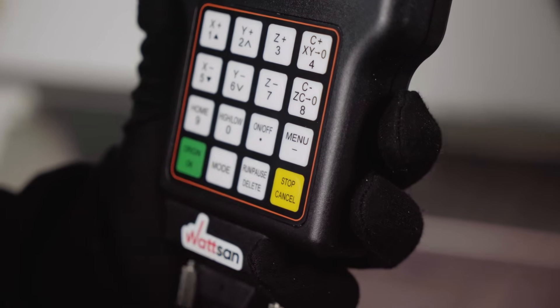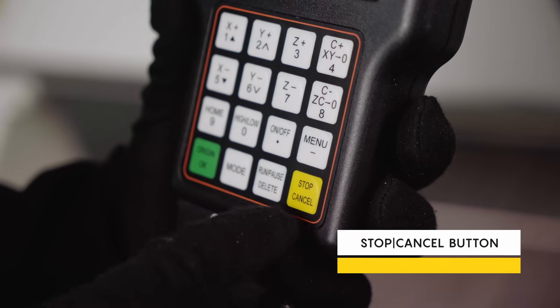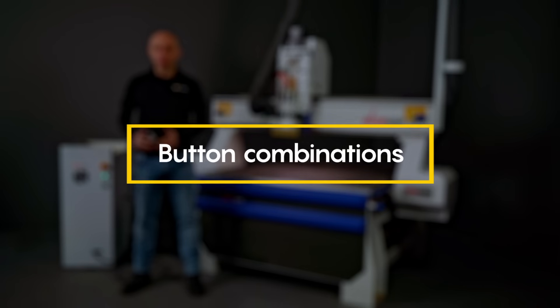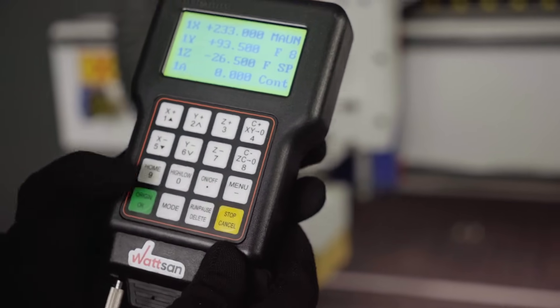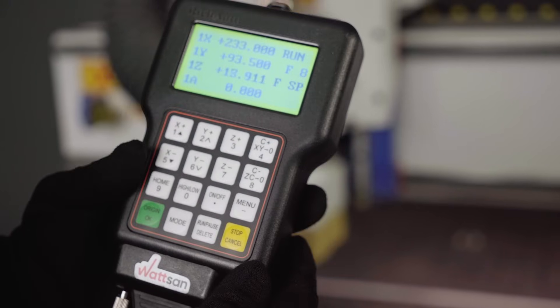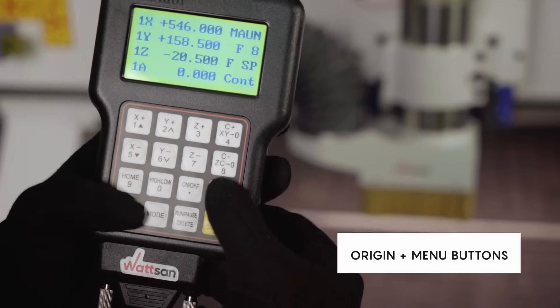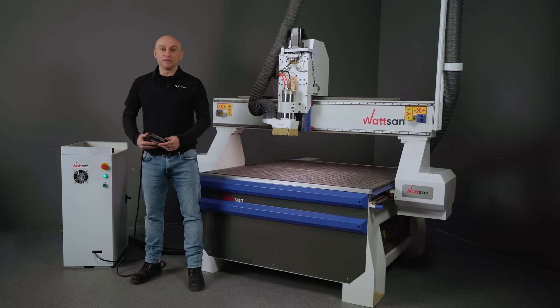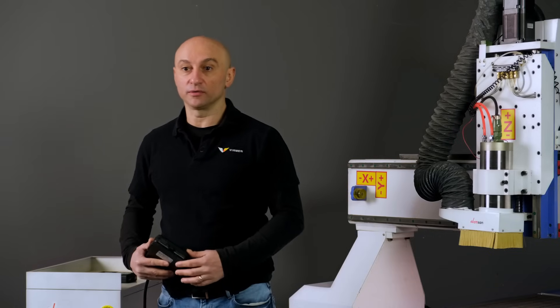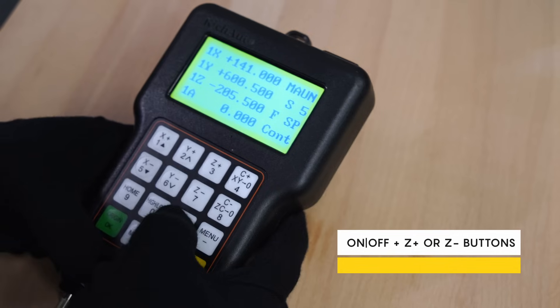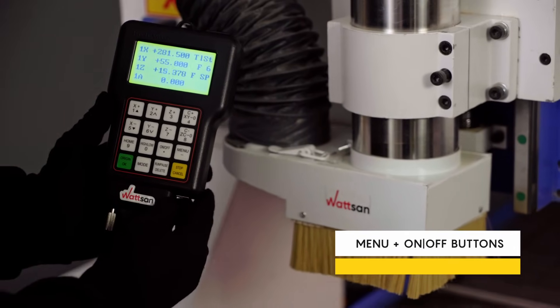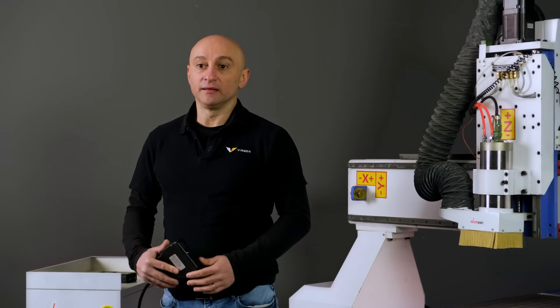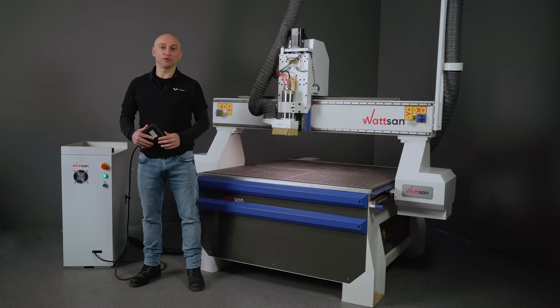All of those buttons have more functions when pressed together. To do so, first push the functional button followed by the supplementary one, then release both of them. Origin plus Menu launches the system restart. To start the spindle and increase or decrease its rotation speed, you need to press On/Off and Z Plus and Z Minus. If automatic tool setting on the Z axis is required, press Menu plus On/Off. These are the main combinations that you might need. There are others—you can find them in the controller manual.